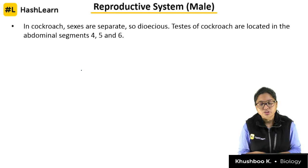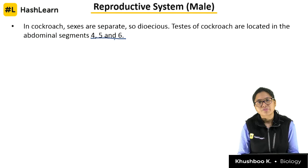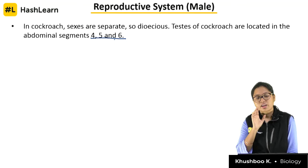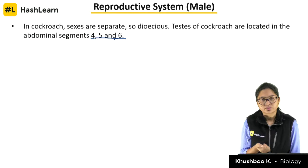Testes are in abdominal segments 4, 5, and 6. This segmentation — which segment contains what — is important, especially as given in your textbook. The mushroom gland consists of two types of tubules: long slender tubules called utriculi majors, also called peripheral tubules; and short tubules called utriculi breviores, making up the major part of the gland.